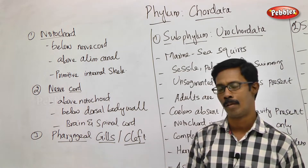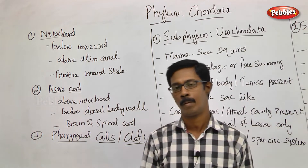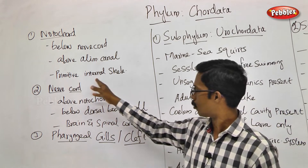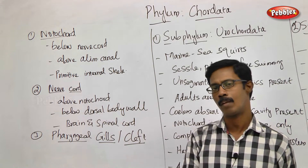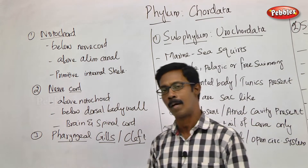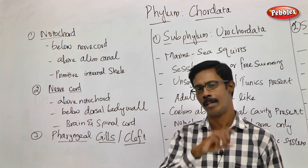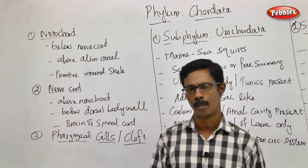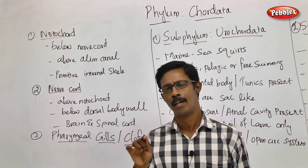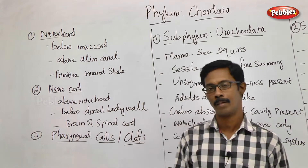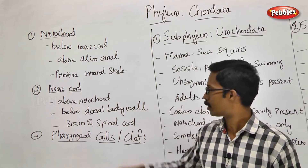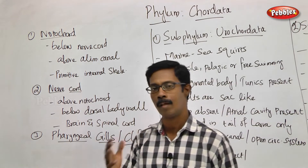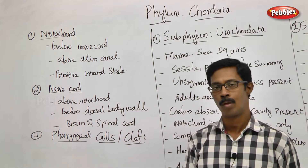What is the notochord? In well-developed animals, the notochord is a skeletal system. The notochord is actually a primitive internal skeletal system. If we have a notochord, we can develop an internal skeletal system — a bony structure. In case of chordata, the notochord can develop into a backbone.